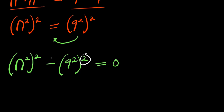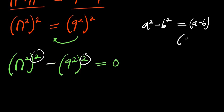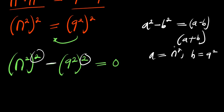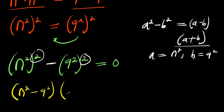Now I have power 2 here and power 2 here with a minus, so I can make use of the difference of two squares. If you have a power 2 minus p power 2, this equals (a minus p) times (a plus p). In this case our a equals n power 2 and p equals 9 power 2, so applying that we get (n power 2 minus 9 power 2) times (n power 2 plus 9 power 2) equals 0.